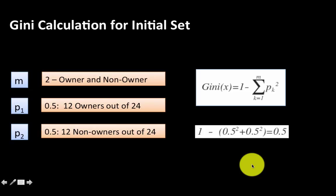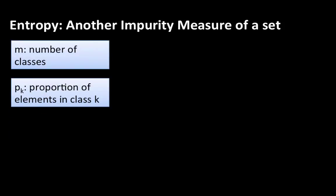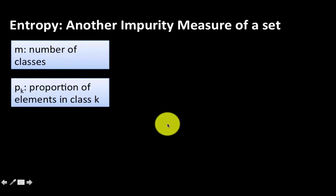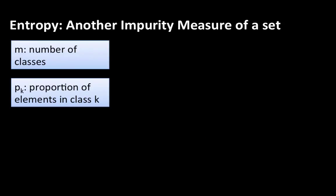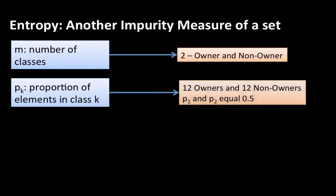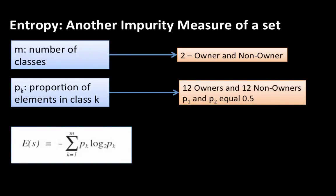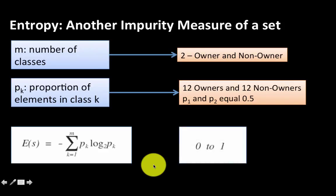In addition to the Gini index, we also have the option of using another measure of purity or impurity called entropy. Here, m is the number of classes — in our case that is 2 — and p_k is the proportion of elements in class k. In our case, p(buyer/owner) is 0.5 and p(non-owner) is also 0.5. The formula for entropy is: minus sigma, k equals 1 to m, p_k times log base 2 of p_k.